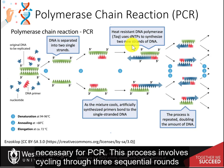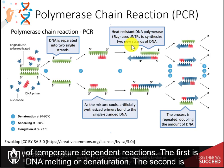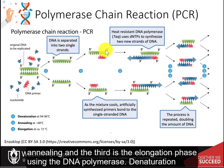This process involves cycling through three sequential rounds of temperature-dependent reactions. The first is DNA melting, or denaturation. The second is annealing. And the third is the elongation phase, using the DNA polymerase.